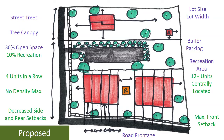What's being proposed is to keep much of that but to make a few incremental changes: to look at not just requiring an overall quantity of recreation space but really quality and where it's located, to lessen the units in a row from 6 to 4, to not have a density maximum, to decrease side and rear setbacks to allow for units to have greater ability to be developed, and to have a maximum front setback.